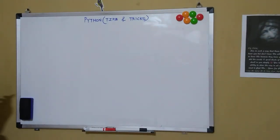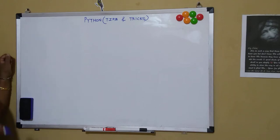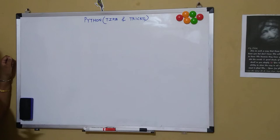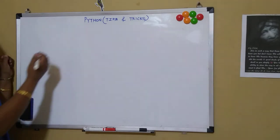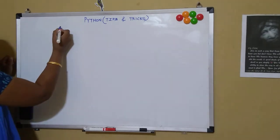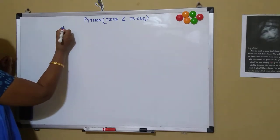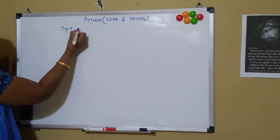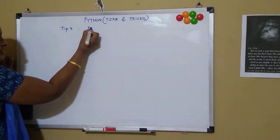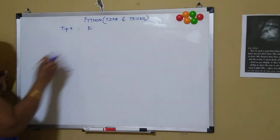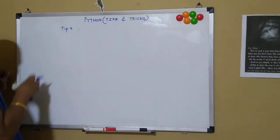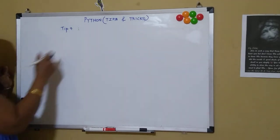So firstly, we all have heard about dictionaries. What is the easy method of creating a dictionary in Python programming language? It is with the help of dictionary comprehension. Tip number seven: creating a dictionary with the help of dictionary comprehension.